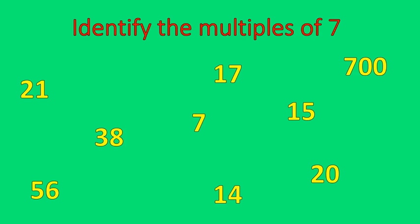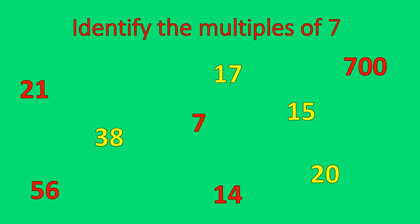Go ahead and identify the multiples of 7. There are several of them up there. You can pause the recording if you'd like. Welcome back — here are the multiples of 7. We have 7 times 1 is 7, 7 times 2 is 14, 7 times 3 is 21, 7 times 8 is 56, and 7 times 100 gives us 700. These are all multiples of 7. You don't have to list them in order.